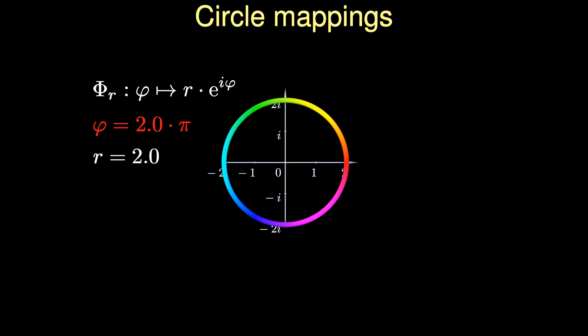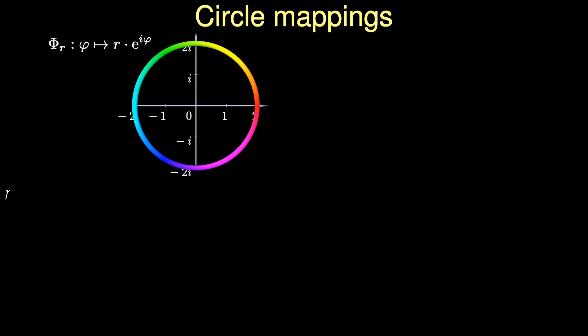The factor r in front of the exponential scales the size of the circle. We now use simple polynomials to map this circle into differently shaped curves. The simplest case is a linear polynomial. It just changes the size of the circle. Even simpler, a constant term would only change the location of the circle.